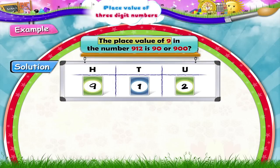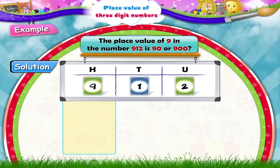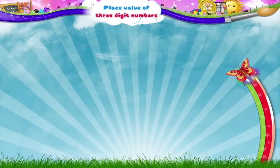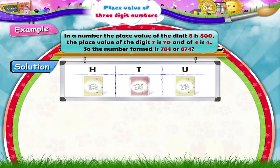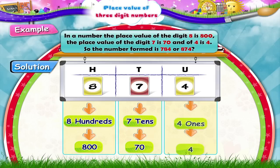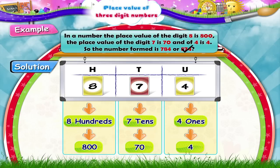The place value of nine in the number nine hundred and twelve is ninety or nine hundred. The correct answer is nine hundred. The place value of the digit seven is seven hundred and of four is four. So the number formed is seven hundred and eighty-four or eight hundred and seventy-four. The answer is eight hundred and seventy-four.